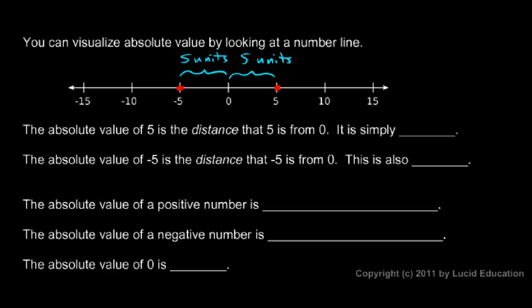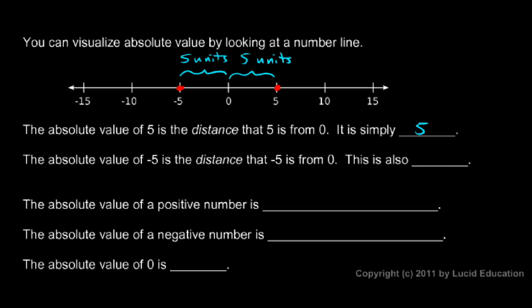5 is right there, and it is 5 units from the origin. The number negative 5 over here is also 5 units from the origin. So the absolute value of 5 is the distance that 5 is from 0, which is simply 5. The absolute value of negative 5 is the distance that negative 5 is from 0 — it's 5 units away, so it's also 5. And this would be the case for any number, not just 5 and negative 5.